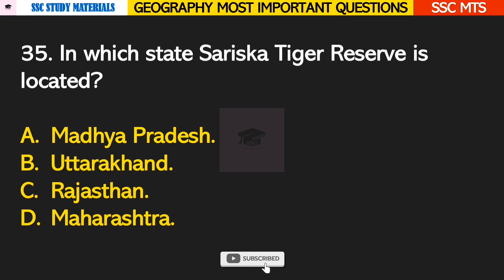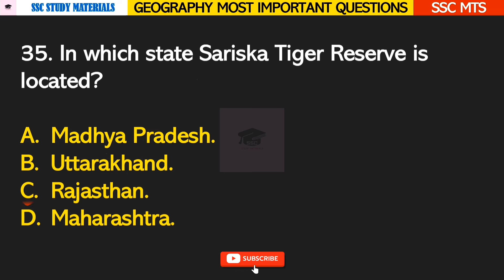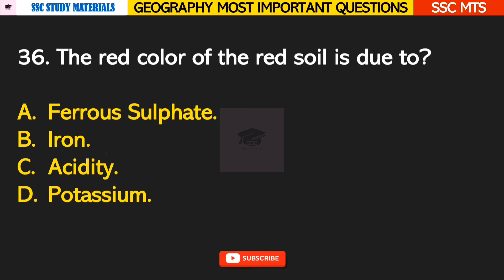Question number 35: in which state is Sariska Tiger Reserve located? Answer C — it is located in the state of Rajasthan. Question number 36: the red color of red soil is due to? Answer B — it is due to iron.